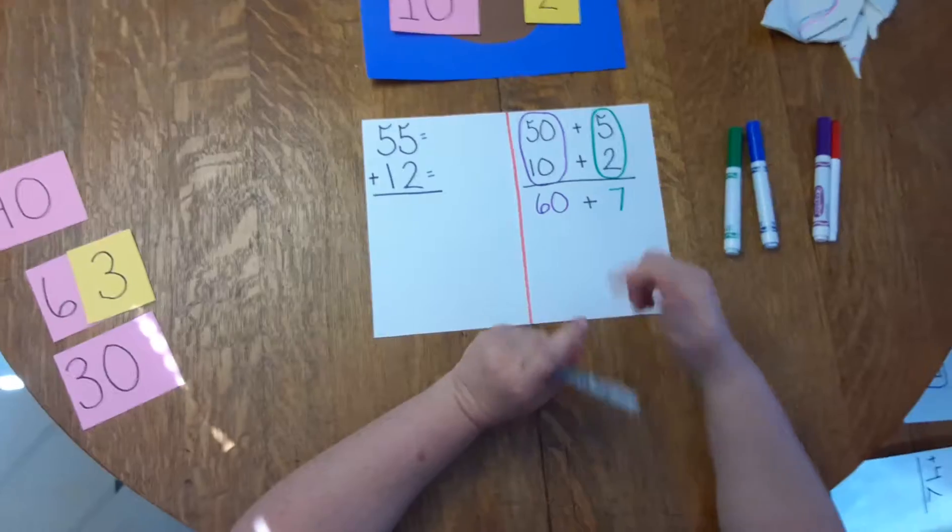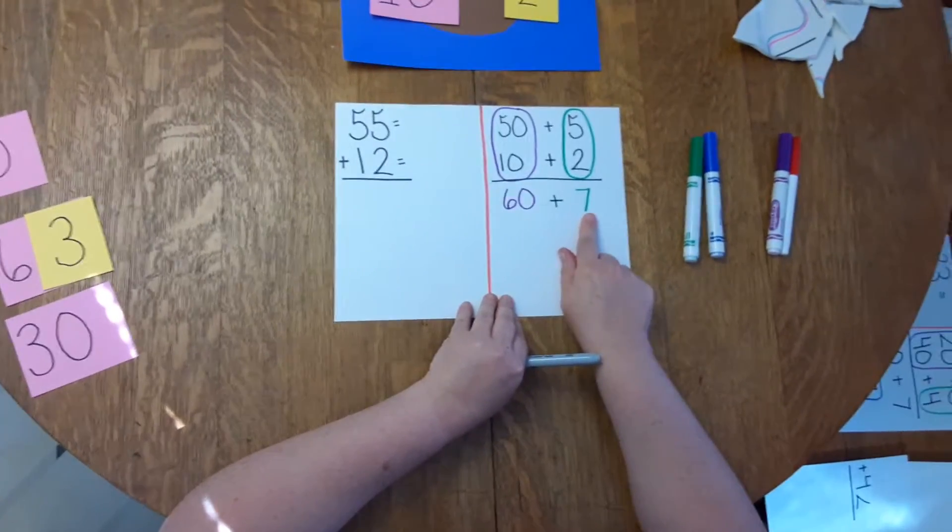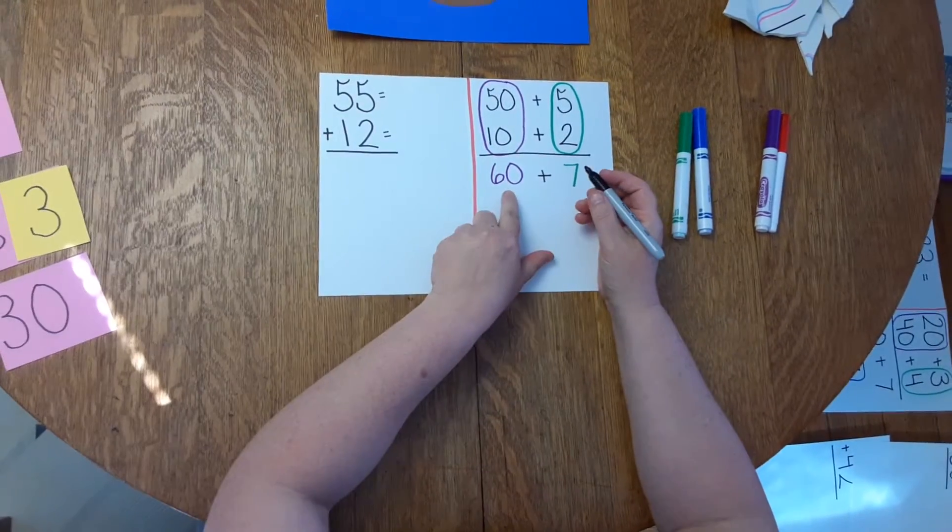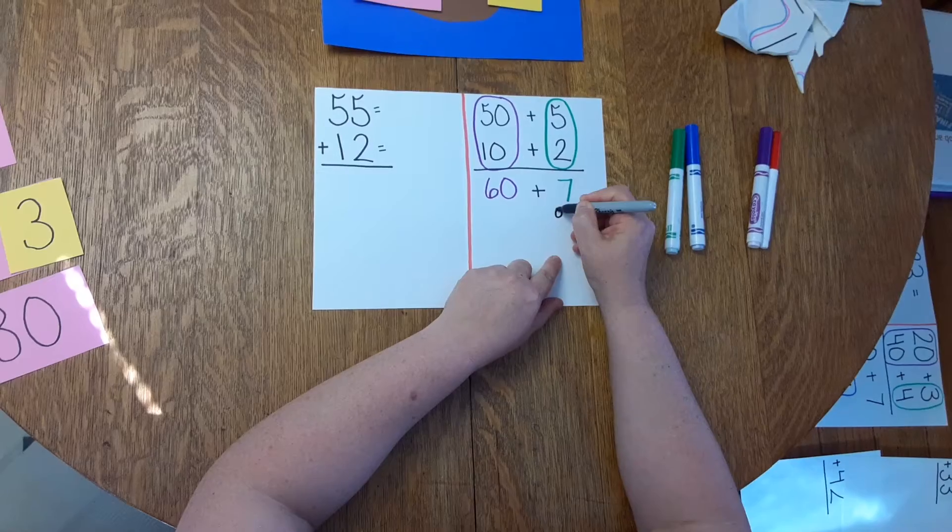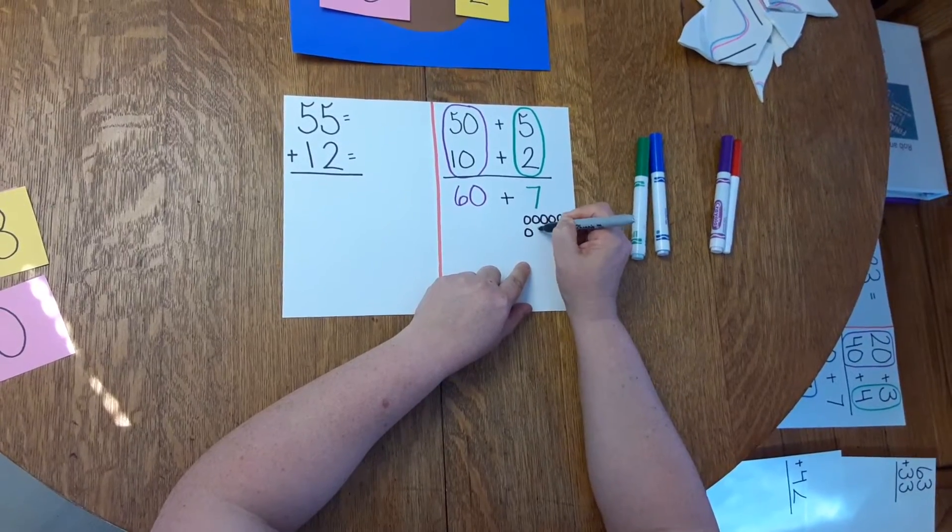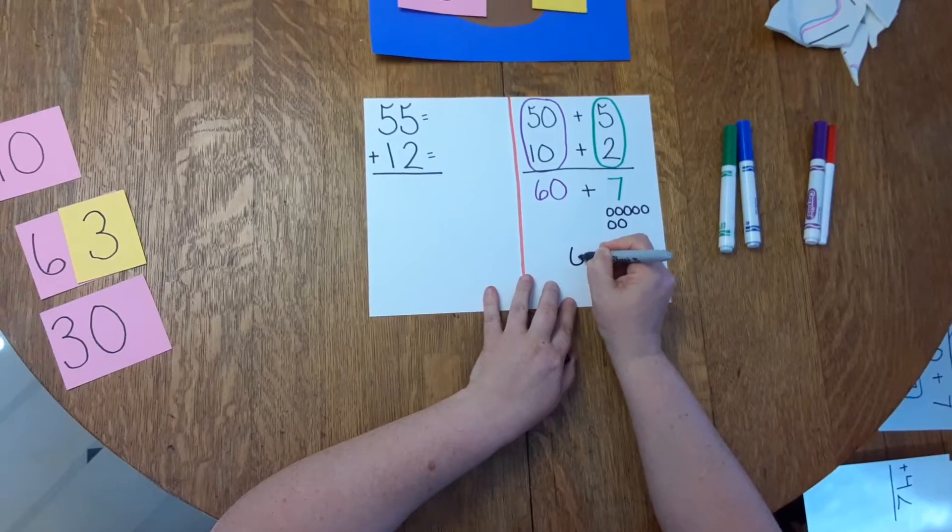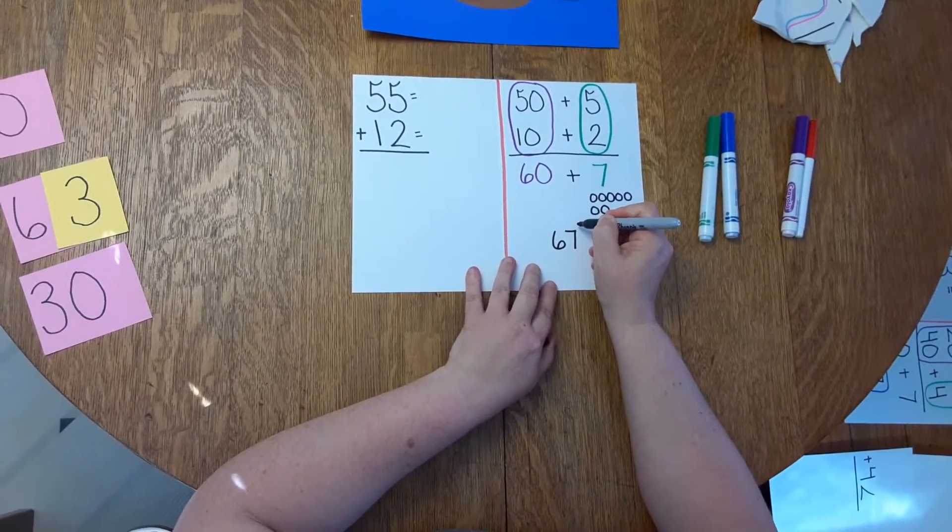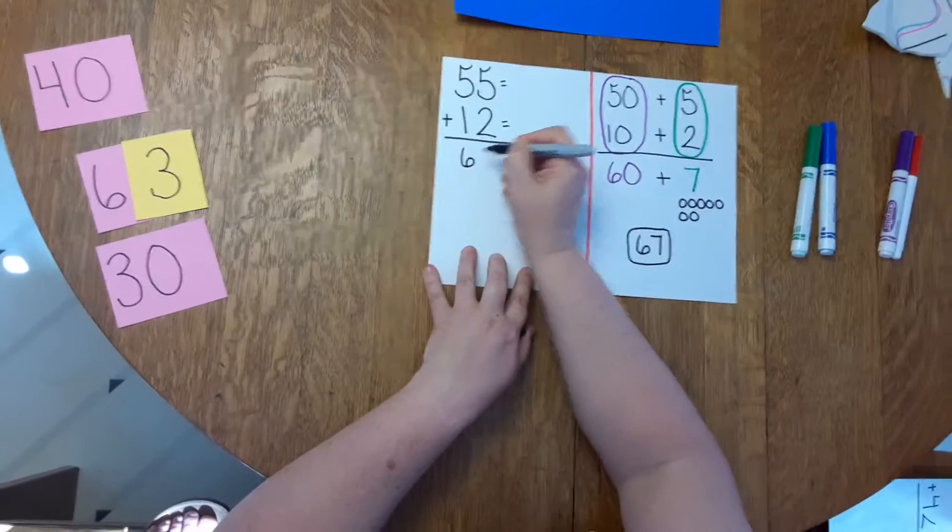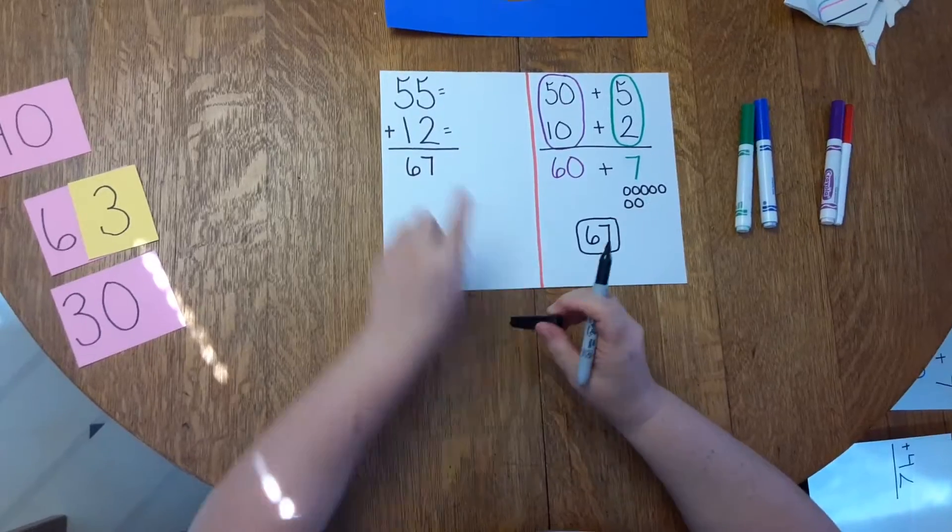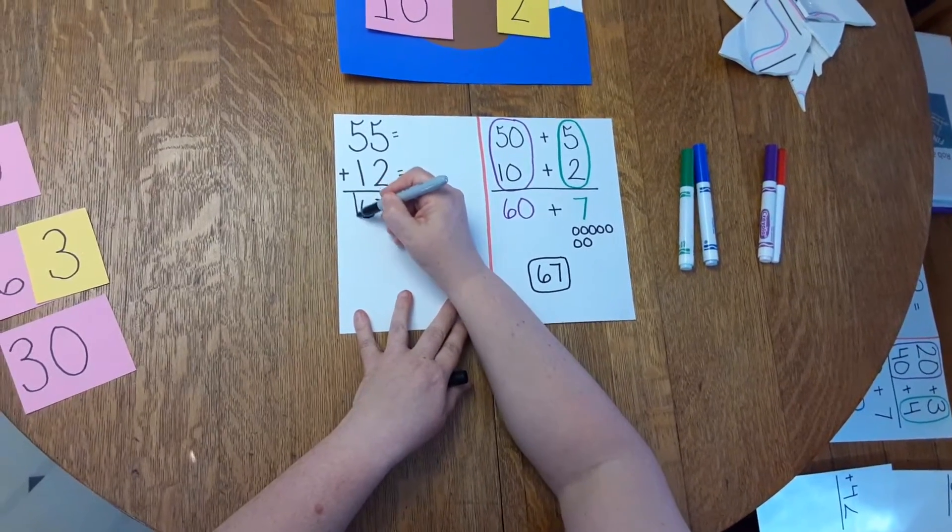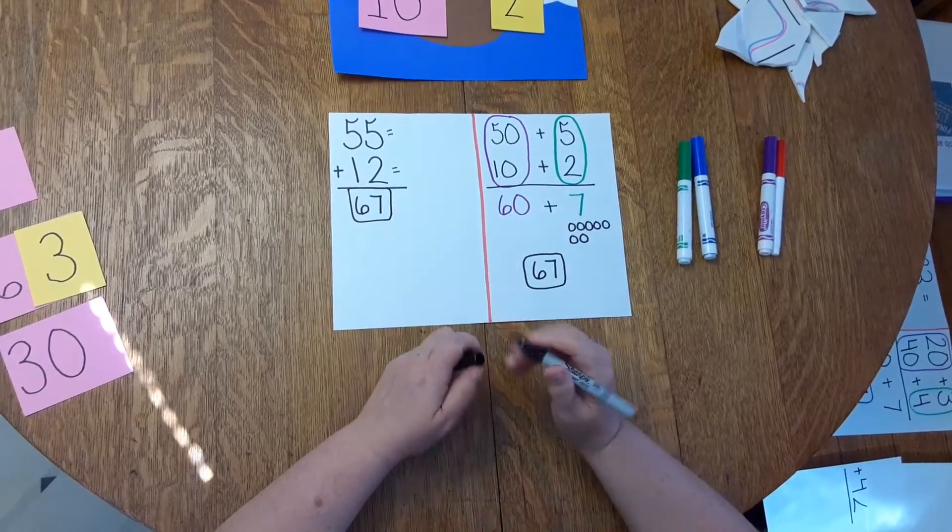Then what I do is I add the tens and the ones together. So I start at 60, and I add 7. If I need to, I can go 60, and I can go 61, 62, 63, 64, 65, 66, 67. Write down 67. And then my captains are getting old, so I have to circle my answer so that they can find it. So 55 plus 12 is 67. And again, I circle it.